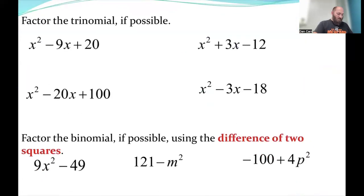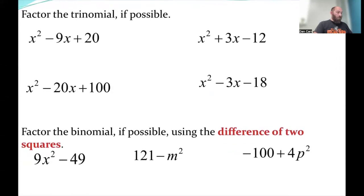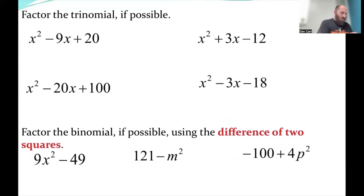Back to the trinomial as a quick reminder. This is based on a review from before. So if I do this real quick, x squared is x and x. Positive 20, negative in the middle is two negatives. So what multiplies to 20 adds to a negative nine? It's not factorable actually. Oh sorry, no, never mind. Negative four, negative five.